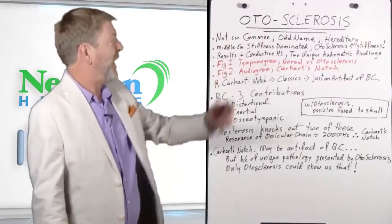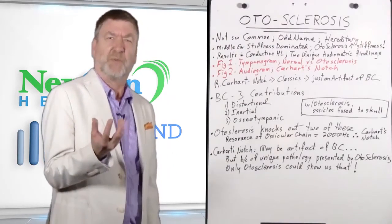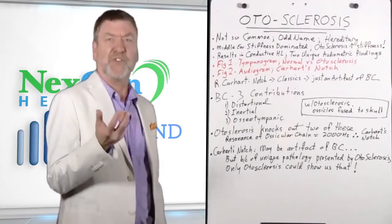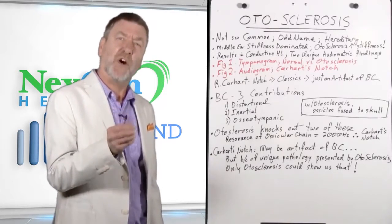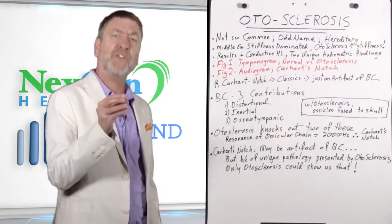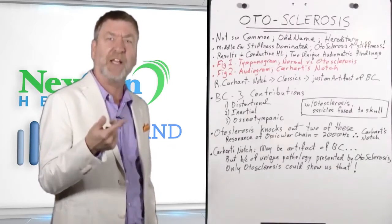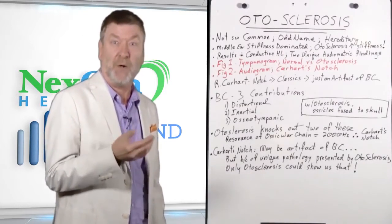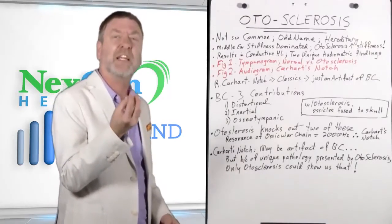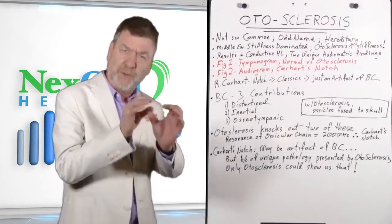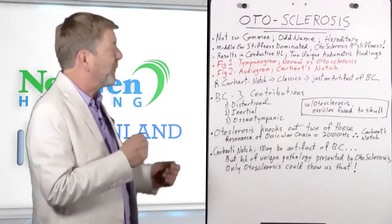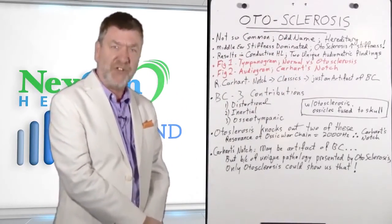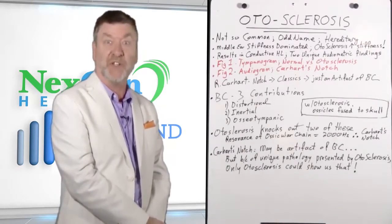It has a rather odd name, really. Sclerosis means a hardening, but otosclerosis itself is actually a soft growth of porous bone around the footplate of the stapes. You might want to call it otoporosis, a soft growth, like a neoplasm growing around the footplate of the stapes. At any rate, it is hereditary. If mom or dad has it, chances are one of the kids is going to have it.